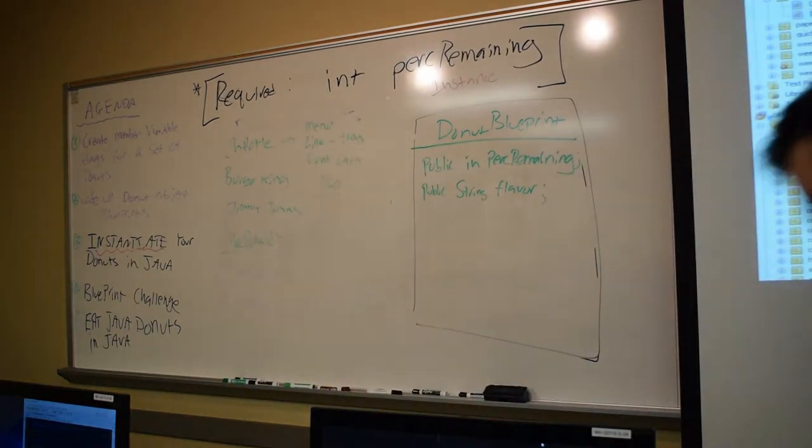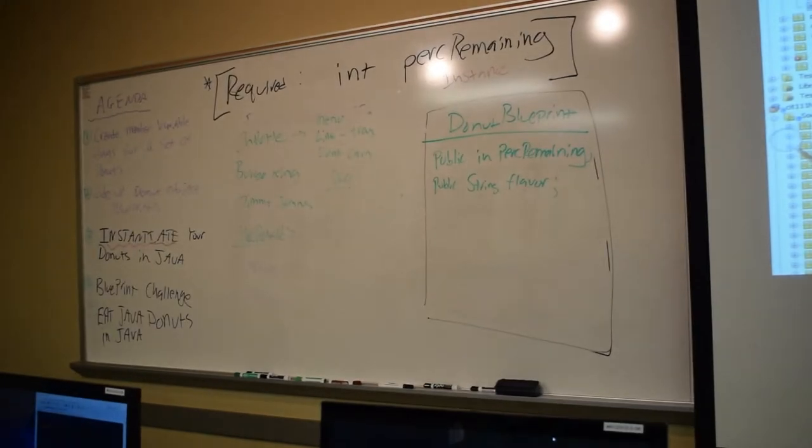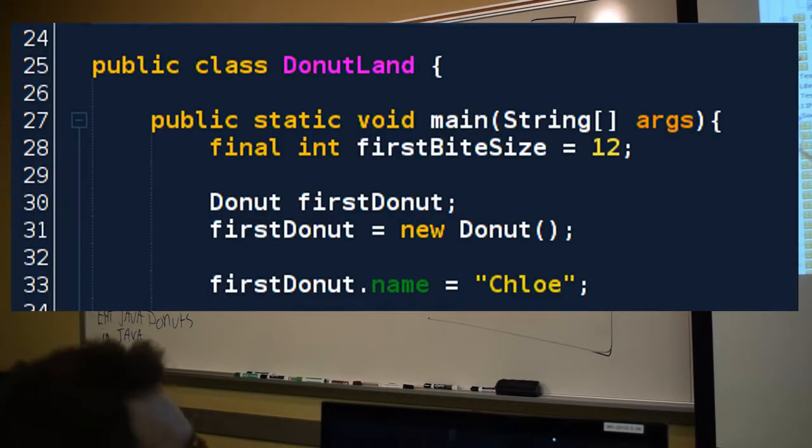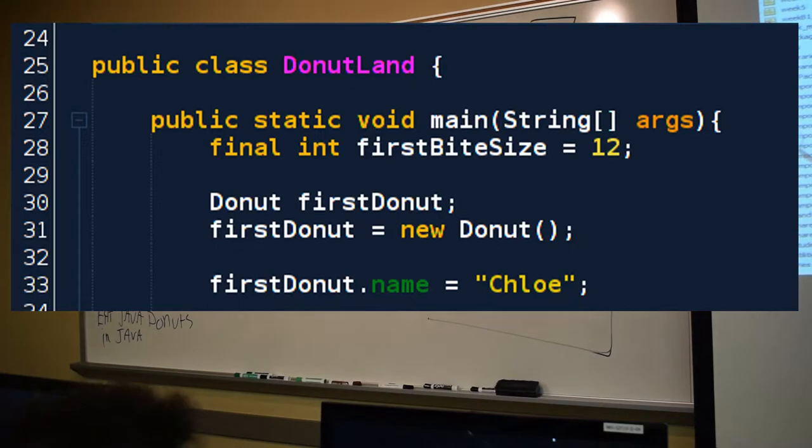We're going to make a method main only in donut land. Our blueprint isn't a program. It's just a blueprint for making donuts. It's not a standalone program. Donut land is what we're used to. So we can say public static void main. It accepts a string array.